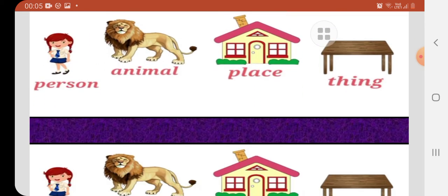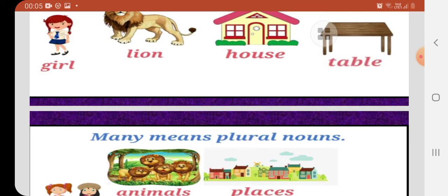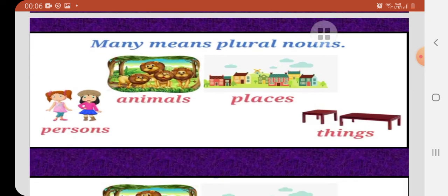So children, one means singular noun. Here, one person, one animal, one place and one thing can become in the singular noun. One person like we are saying like this, one girl, lion, house, table are the example of singular noun. In singular noun refers to one person, one thing, one place and one animal.